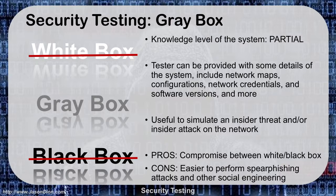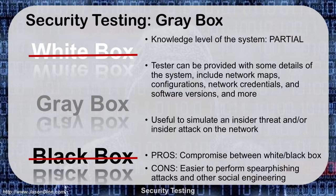Gray box makes spear phishing and social engineering attacks easier to perform because you already have insider knowledge — that's a con for the organization but makes the tester's job easier. The con is it's not as realistic as black box for simulating a pure outsider attack. However, gray box tends to be a fairly good compromise between white and black box.